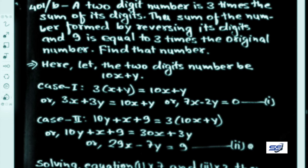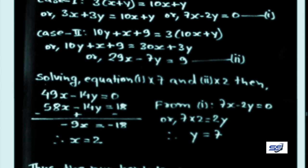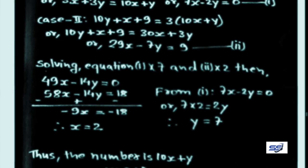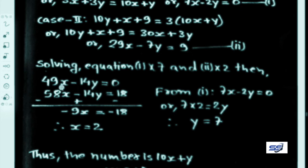To solve equations 1 and 2, multiply equation 1 by 7: 49x minus 14y equals 0. Multiply equation 2 by 2: 58x minus 14y equals 18. Subtracting: minus 9x equals minus 18, therefore x equals 2.